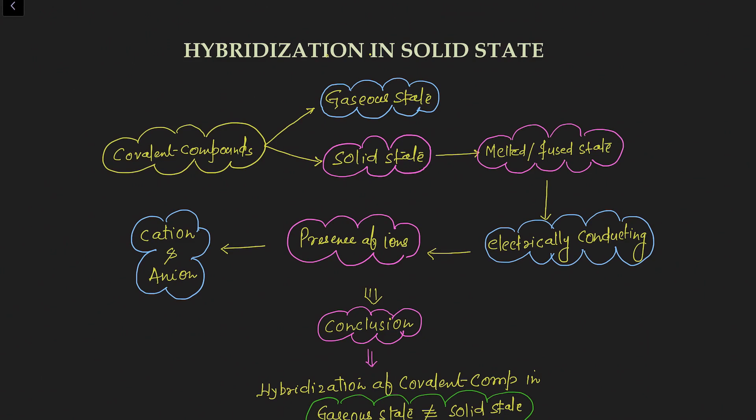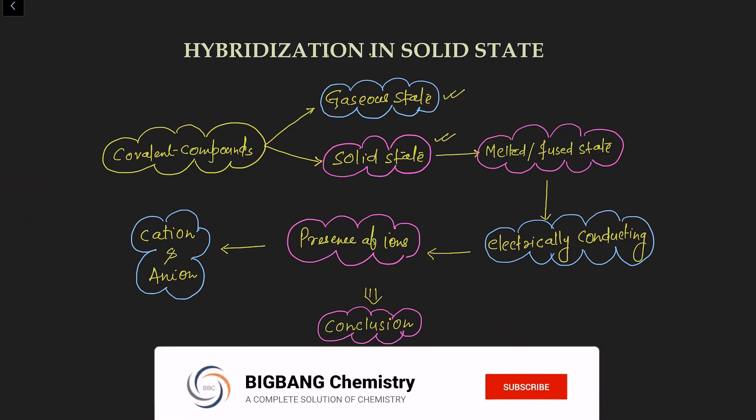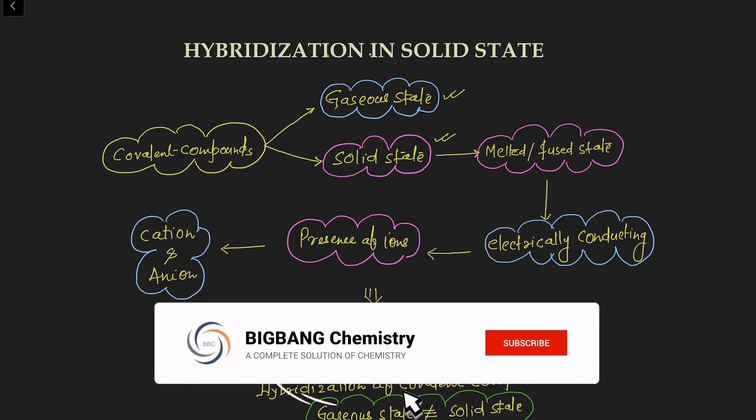Welcome to Big Bang Chemistry, a complete solution of chemistry. Today we are going to discuss hybridization in solid state, meaning the hybridization of covalent compounds in solid state. There are some covalent compounds which exist in gaseous state as well as in solid state.